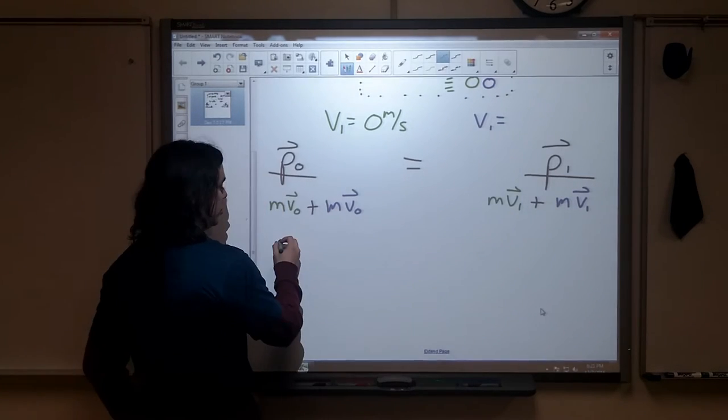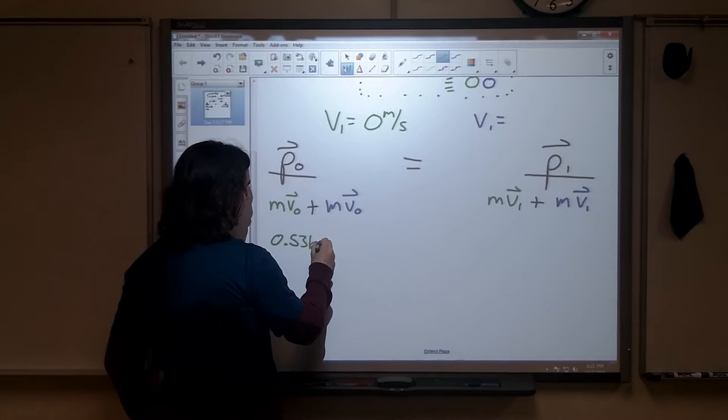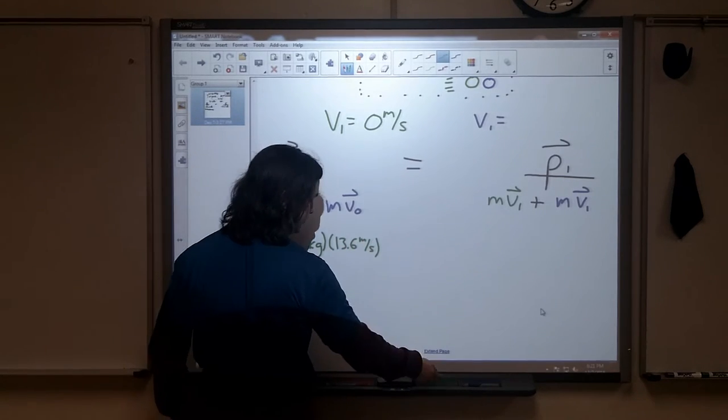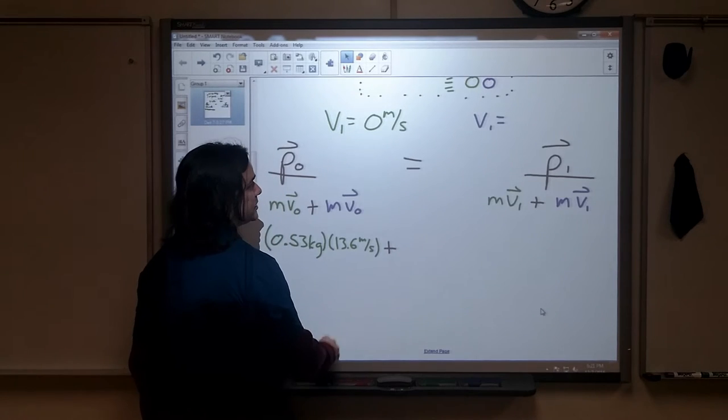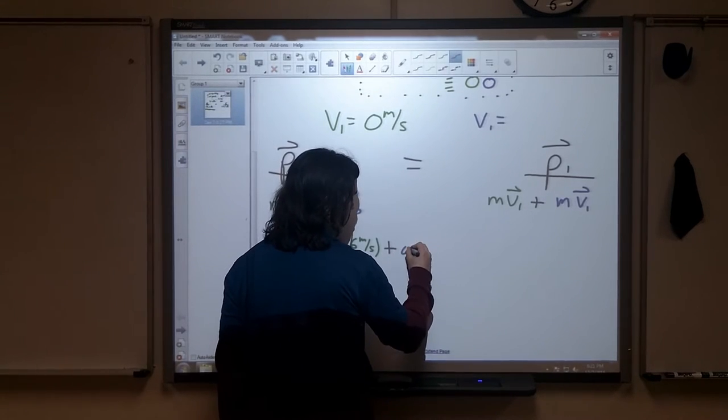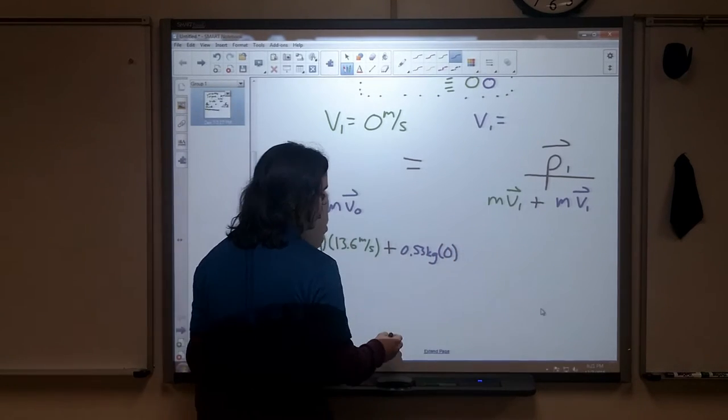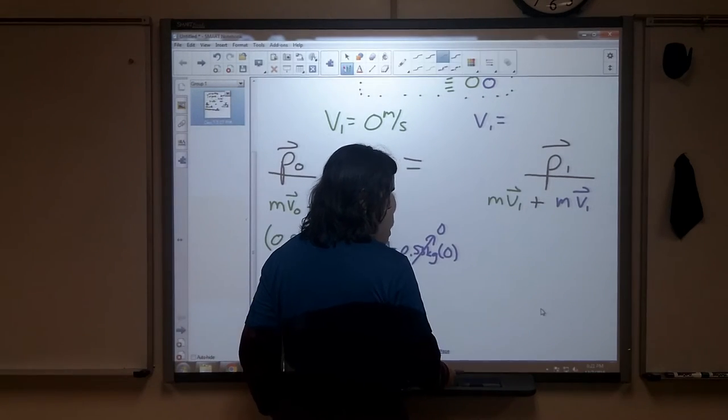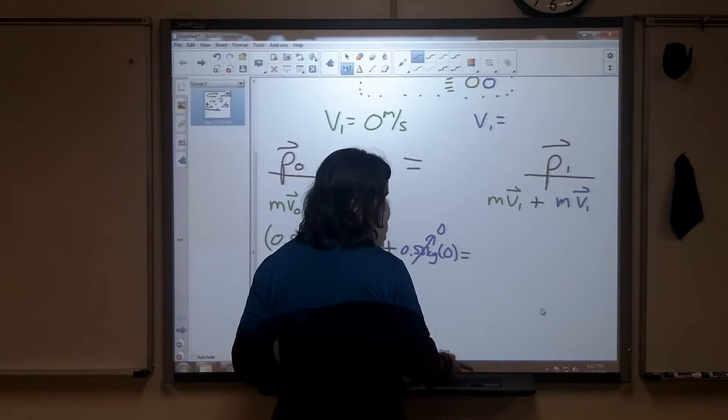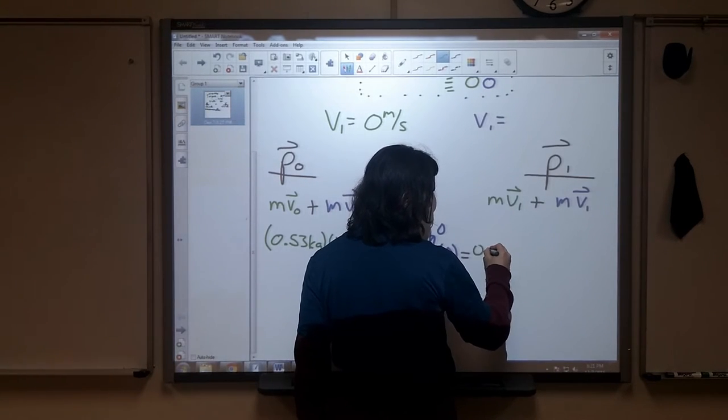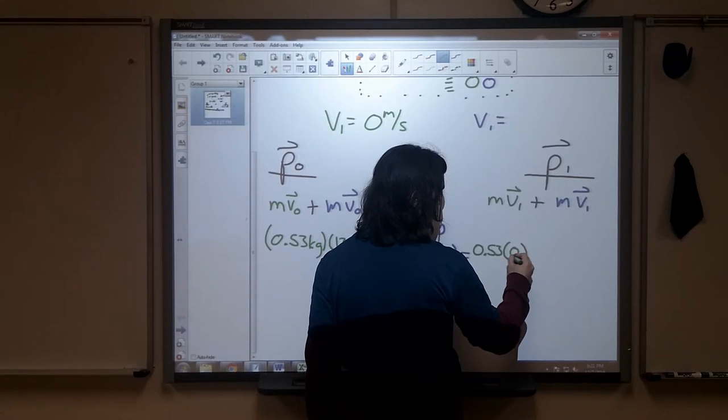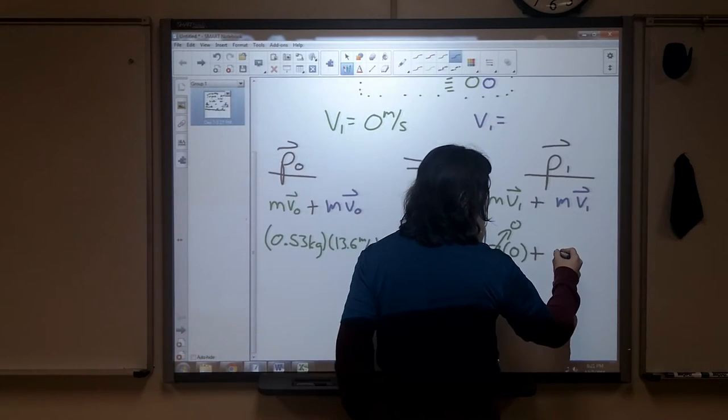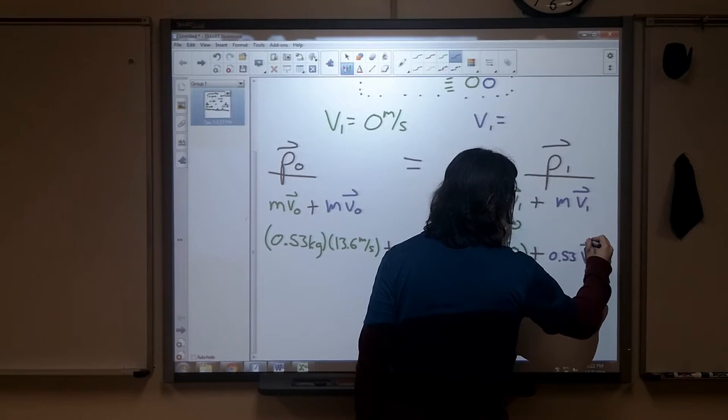So we were told the mass of each of these is 0.53 kilograms and we know the initial velocity for this one was 13.6 meters per second. Plus the mass of the blue ball, which is 0.53 kilograms, but its initial velocity is 0 meters per second, so we don't get any momentum from that. Over here at the end, what we're going to set this equal to, well our final momentum for the green ball is 0.53 times 0 because they say that the green one actually comes to a stop at the end. Then we're going to have 0.53 times v_1.